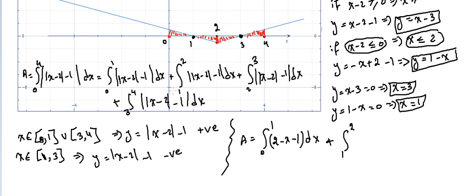Finding area using integration, part 2. We started in part 1 to find the integral of |x-2| minus 1 from 0 to 1. Now from 1 to 2, the function is enclosed below the x-axis, so it gives a negative value.